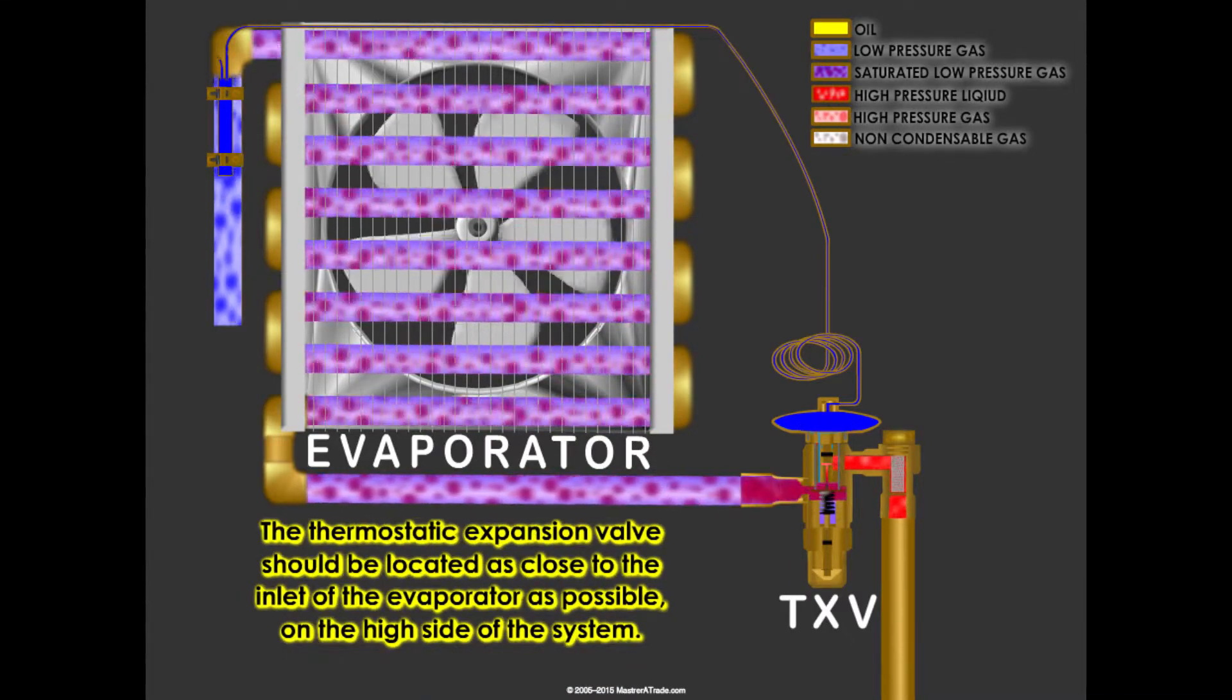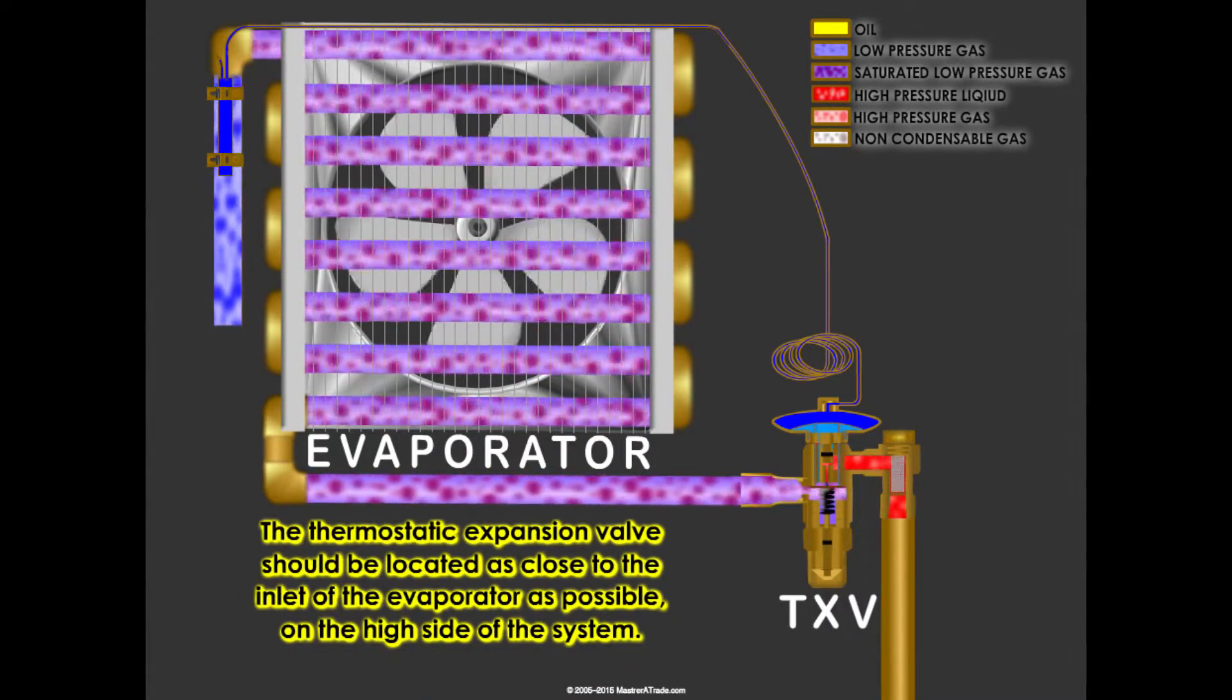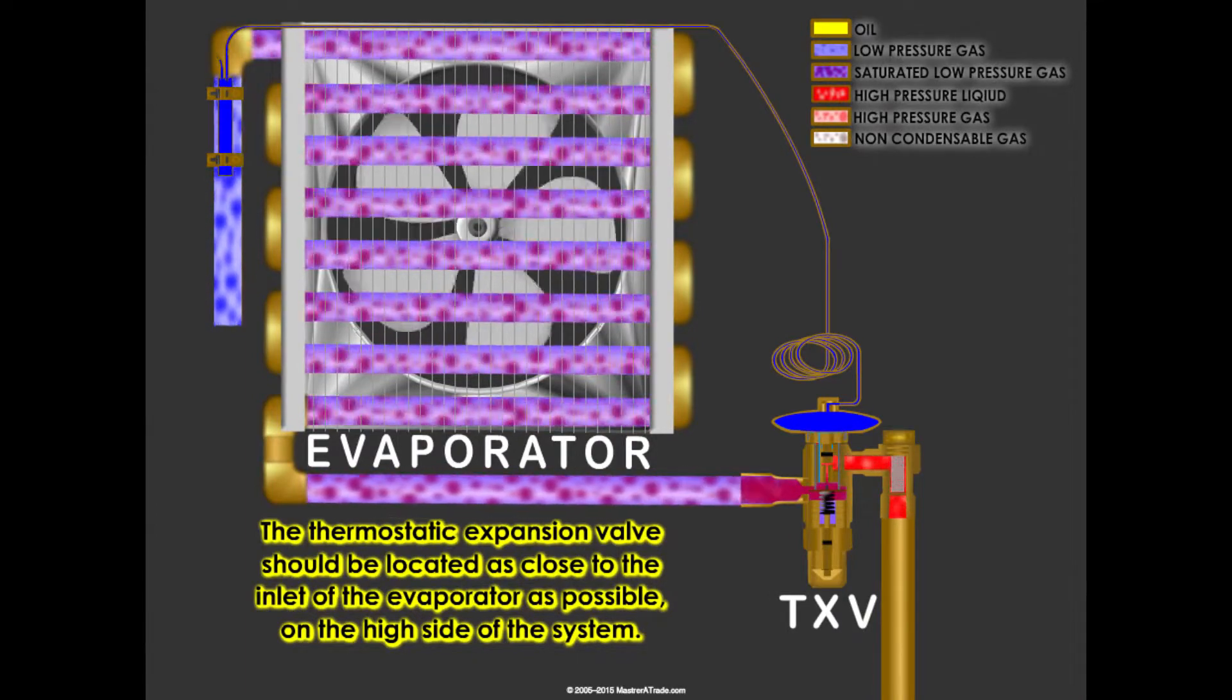The thermostatic expansion valve should be located as close to the inlet of the evaporator as possible on the high side of the system.